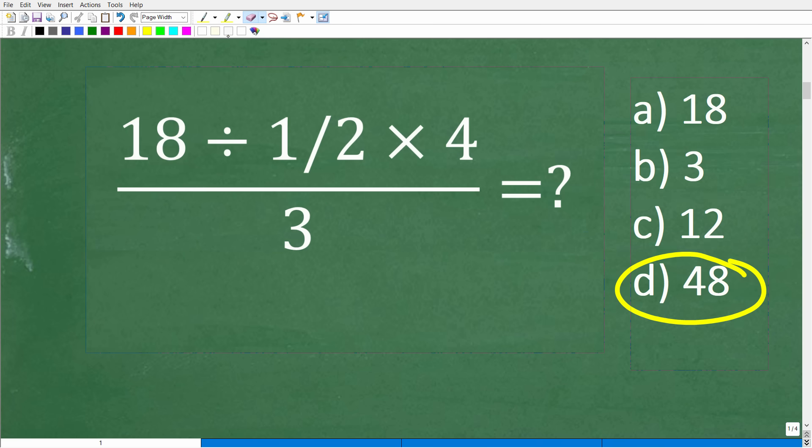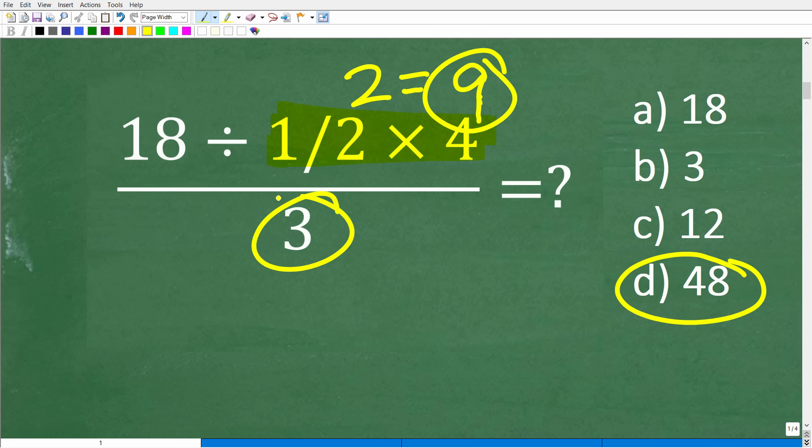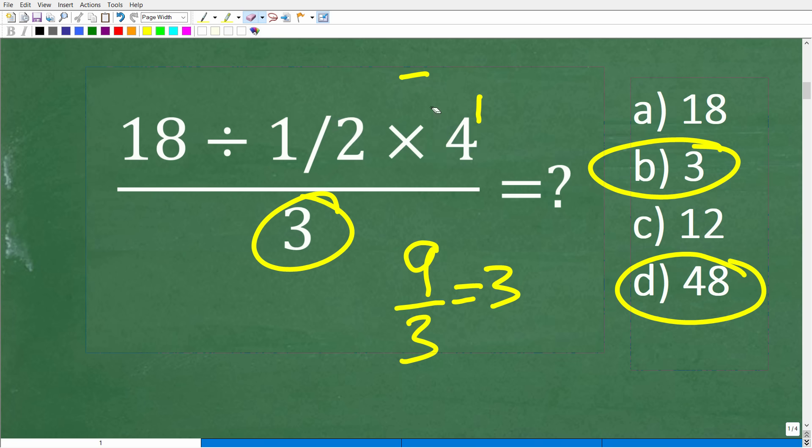But someone else could have maybe started the problem this way and said, well, 1/2 times 4. So 1/2 times 4 is what? Well, 1/2 of 4 is 2. Now I have 18 divided by 2, and that's 9. So now I have a 9 up in the numerator, and I have a 3 down in the denominator. So I have 9 over 3, and 9 divided by 3 is 3. So 3 looks pretty good as well. So, of course, there's different answers depending upon the order you do this problem.